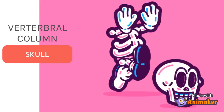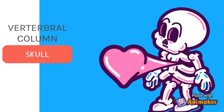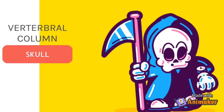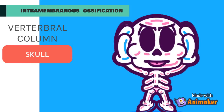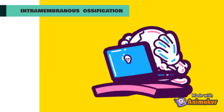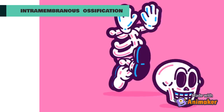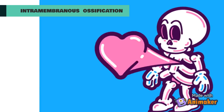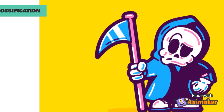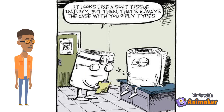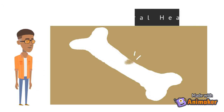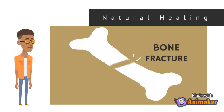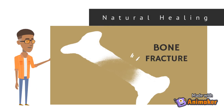The skull and the vertebral column are produced by intramembranous ossification. It is the process by which bone tissues are created, and is important for the natural healing of bone fractures.